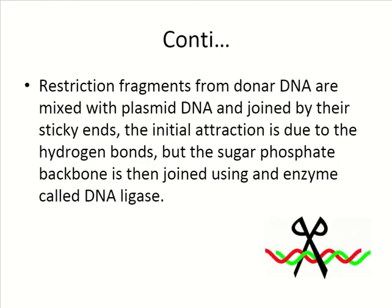The restriction fragments — the cuts produced after a restriction enzyme has cut a strand of DNA — from the donor DNA are mixed with plasmid DNA and joined by common sticky ends where they can hybridize. The initial attraction is due to hydrogen bonding, but the sugar-phosphate backbone is then joined using an enzyme called DNA ligase. Adenosines and thymines on opposite sticky ends attract each other, but they are not permanently attached until DNA ligase seals them.